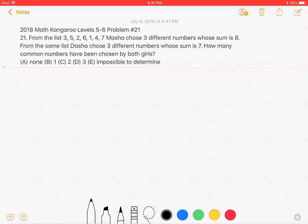From the list 3, 5, 2, 6, 1, 4, 7, Masa chose three different numbers whose sum is 8. From the same list, Dasha chose three different numbers whose sum is 7.